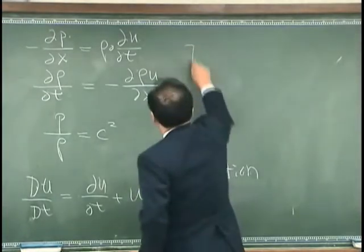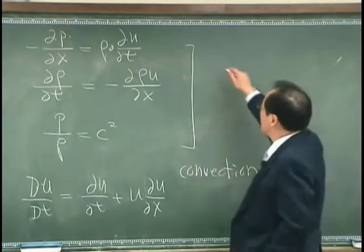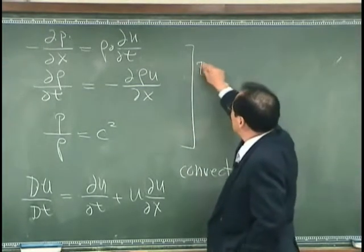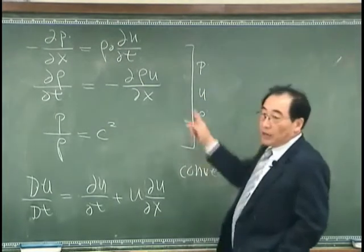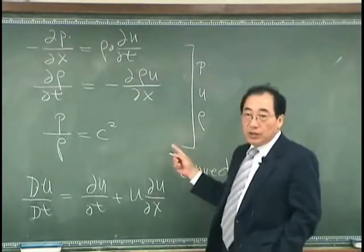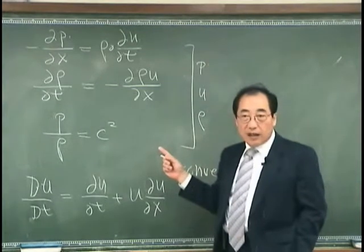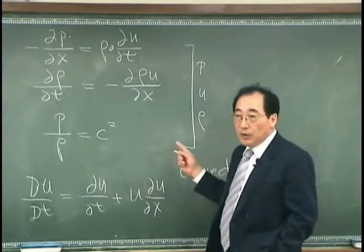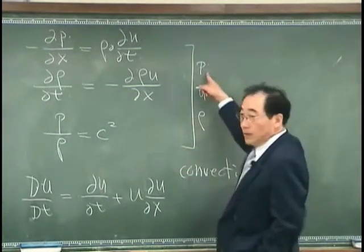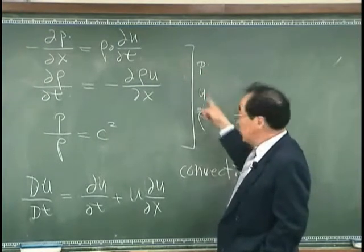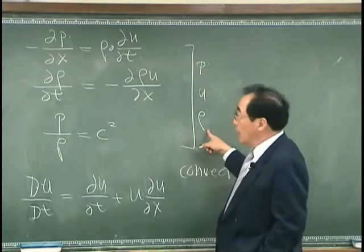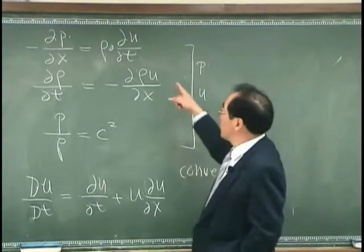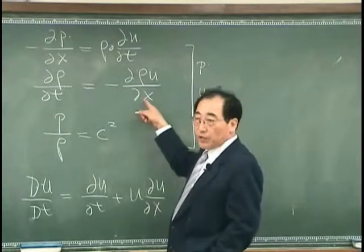Now, what I can do is, because we have three physical parameters p, u, and ρ, and three equations, we can get the governing equation with one physical parameter: p, u, or ρ. Let me eliminate u and ρ from these three equations.